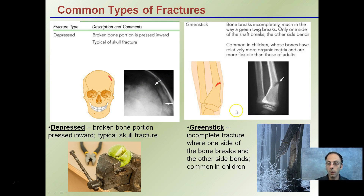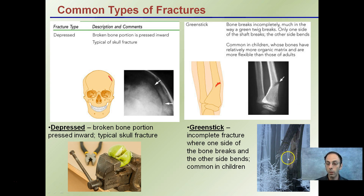Another fracture is called a greenstick fracture. This is an incomplete fracture where one side of the bone breaks and the other side bends, very common in children because they tend to have more flexible bones than adults. We call it a greenstick because it refers to how a green twig of a tree tends to break — one side of the wood breaks and the other bends. This is more common in the winter with snow load, and more common in children than adults who have completely ossified bones.